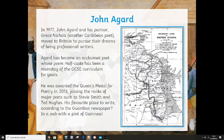When you're looking at poets, don't just think you can only look at the poem that's in the poetry anthology. It helps you to understand a poet if you look at other poems they've written as well. He was awarded the Queen's Medal for Poetry in 2013, joining the ranks of major poets such as Stevie Smith and Ted Hughes. His favourite place to write, according to the Guardian newspaper, was in a pub with a pint of Guinness. At your age I wouldn't recommend the second part, but find a favourite place to write for yourself.